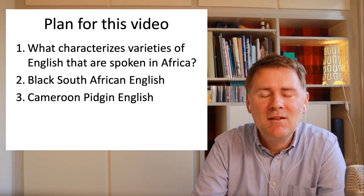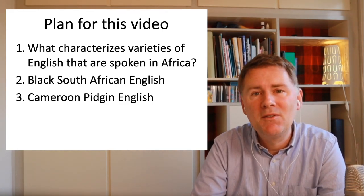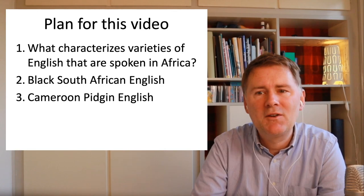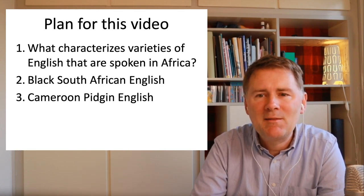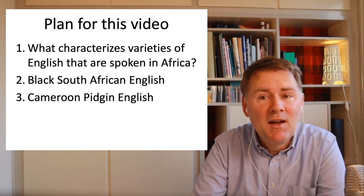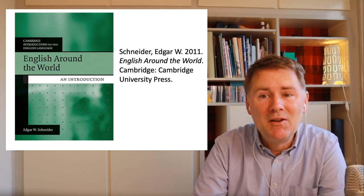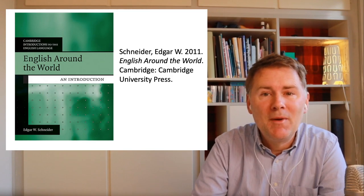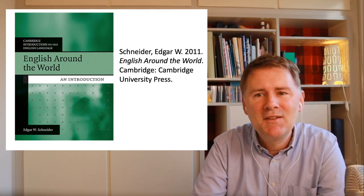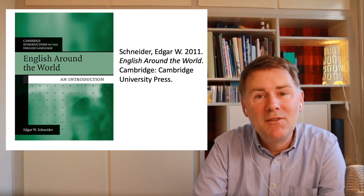Black South African English is what we call an indigenized L2 variety that developed in the context of a settlement colony, South Africa. By contrast, Cameroon Pidgin English is a West African variety that is the product of an exploitation colony and instantiates the kind of language variety called a pidgin. Some of the information in this video, including some of the sounds you'll hear, comes from Edgar Schneider's excellent book 'English Around the World'. Especially chapters five and six contain sections on African Englishes.